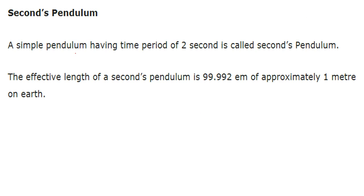Seconds pendulum: a simple pendulum having a period of 2 seconds is called a seconds pendulum. The effective length of a seconds pendulum is approximately 1 meter on Earth.